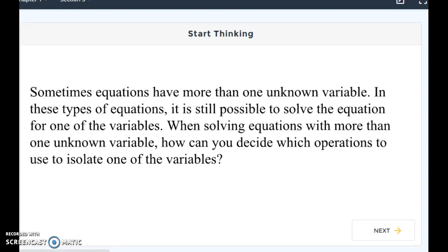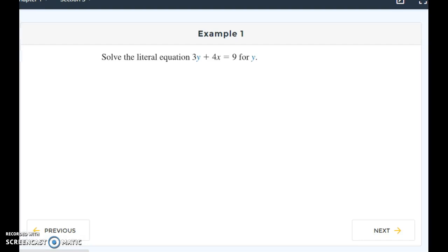Sometimes equations have more than one unknown variable. We've been looking at equations that have one unknown at this point, most of the time x, and solving for that x. Sometimes we'll have more than one variable, but we still need to be able to solve that equation for a variable. And remember, solving means getting that variable by itself. So here's our first equation. We're going to solve the literal equation. A literal equation is an equation that has two or more variables. This would be a good vocab word if you haven't written this one down yet.